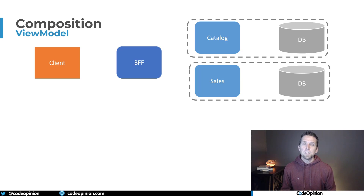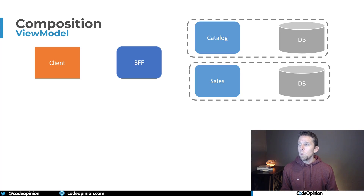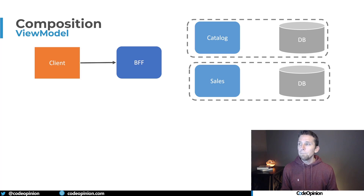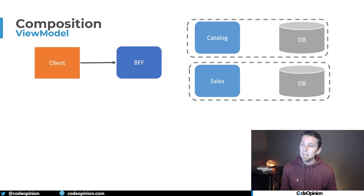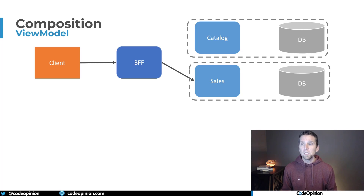is they go the opposite way and start doing view model composition. The idea is you have a backend for front end — a BFF — that does all the composition. The client makes a single call to the BFF for a particular piece of UI, and the BFF fetches all the products from the catalog service. Once it has all that and knows all the products it needs prices for,